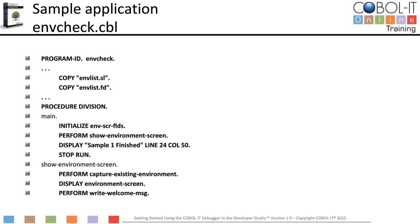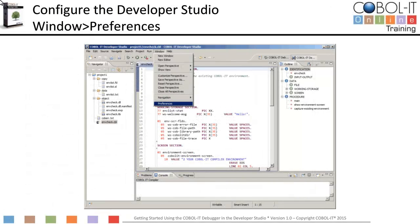Before we start our debugging exercise, we need to configure the workspace. To configure your workspace, select the Window function from the main menu bar, then select Preferences from the drop-down menu. The Window Preferences screen provides the interfaces for configuring a workspace. Configuring a workspace allows you to select preferred behaviors in the code editor, set the compiler flags you will be using in your COBOL project, and select default behaviors.